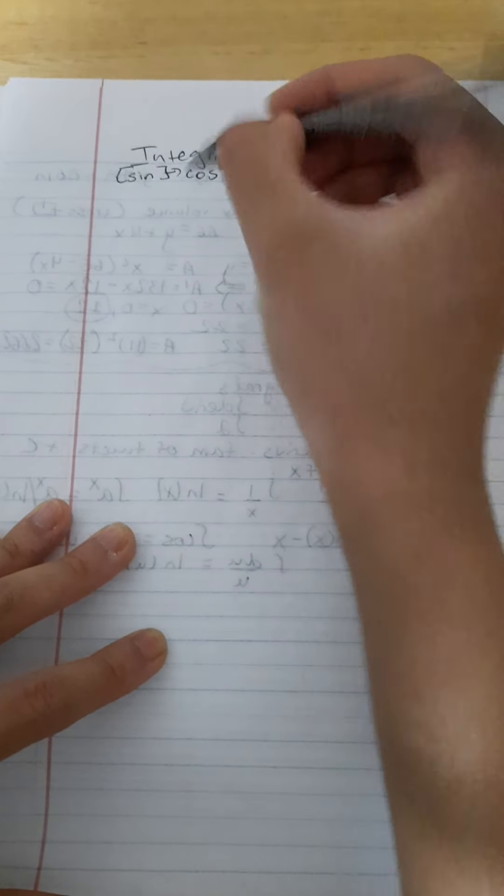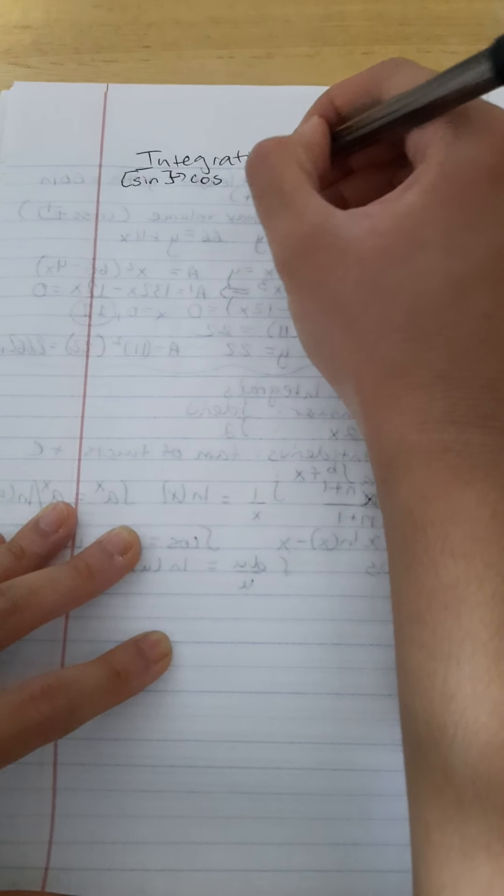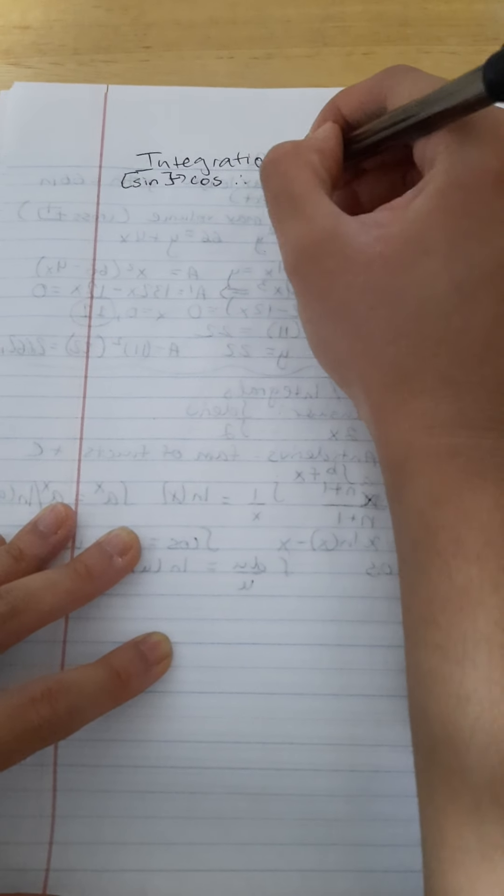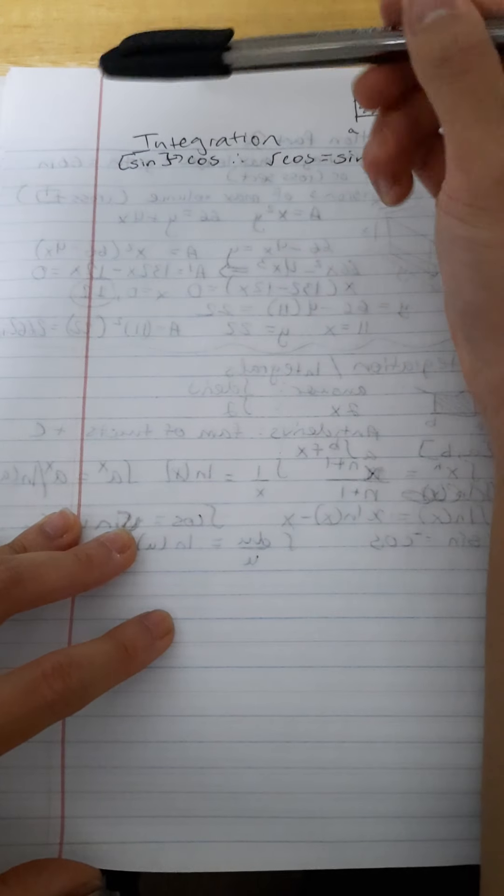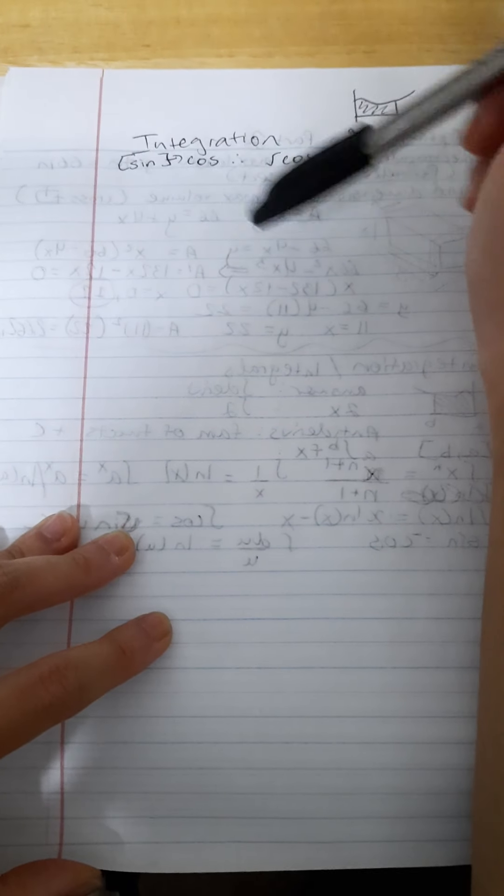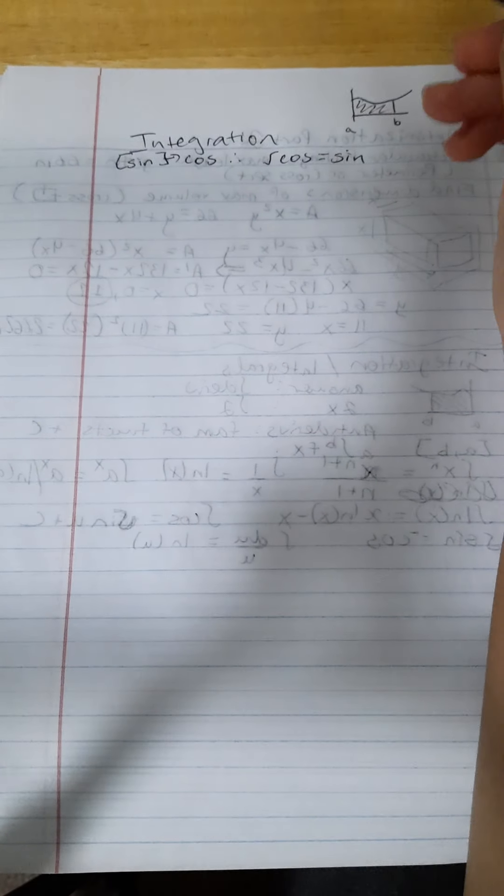So the derivative of cos is sin. So do you see how it's like a jeopardy relationship where you're given the answer, and you need to come up with the question, basically, with integration? It's the opposite of derivation.